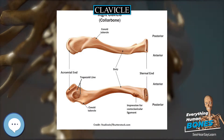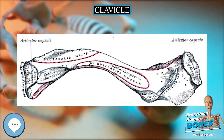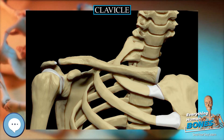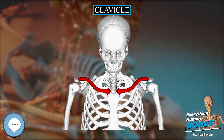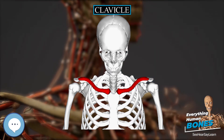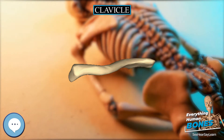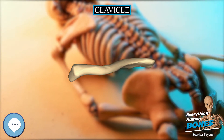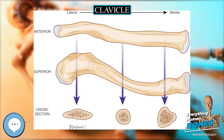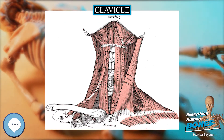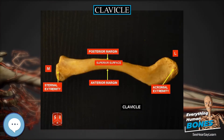The collarbone is a large doubly curved long bone that connects the arm to the trunk of the body. Located directly above the first rib, it acts as a strut to keep the scapula in place so that the arm can hang freely. Medially, it articulates with the manubrium of the sternum at the sternoclavicular joint. At its lateral end it articulates with the acromion, a process of the scapula, at the acromioclavicular joint. It has a rounded medial end and a flattened lateral end. From the roughly pyramidal sternal end, each collarbone curves laterally and anteriorly for roughly half its length, then forms an even larger posterior curve to articulate with the acromion of the scapula.